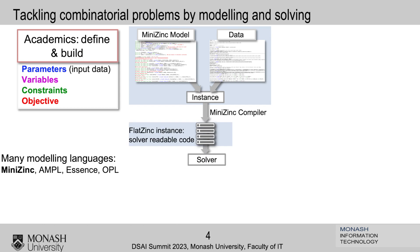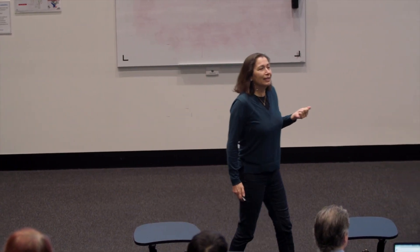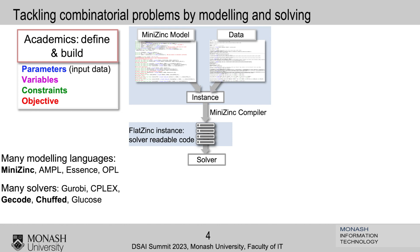Solvers like Gurobi, CPLEX, and so on. It could be Glucose if you're talking about SAT constraints, or Gecode or CHUFFED if you're talking about constraint programming, or Gurobi simply because you're talking about MIP or MILP. That solver-readable code is similar to assembler relative to your Java or Python program — you have the high level all the way down.